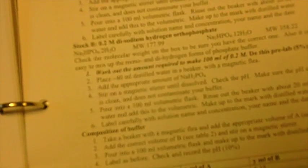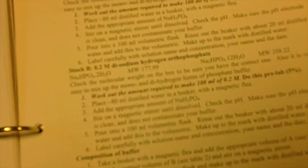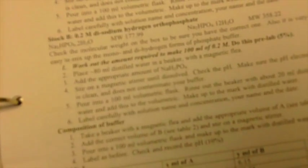So placing 80 ml of distilled water in the beaker with the magnetic flea, adding the appropriate amount of sodium salt, stirring and using the magnetic stirrer until dissolved, checking the pH, pouring into a 100 ml flask and making it up to the mark, labeling it carefully with the solution name and concentration, your name and the date.